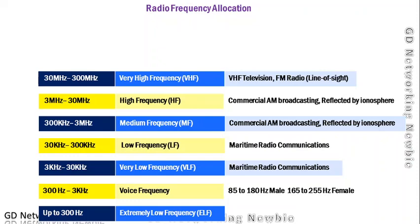From 30 megahertz to 300 megahertz we have Very High Frequency (VHF). These frequencies are used in VHF television and FM radio — FM stands for Frequency Modulation. These frequencies are known as line-of-sight frequencies.